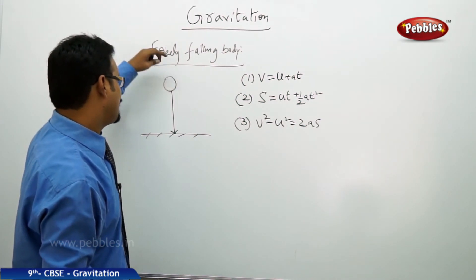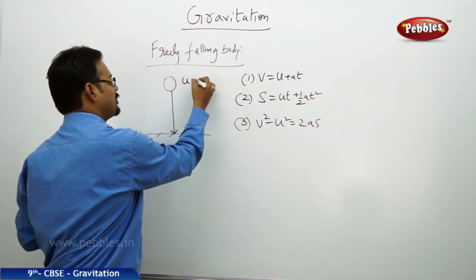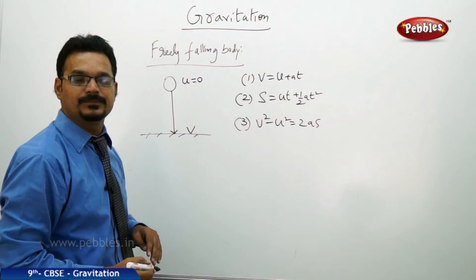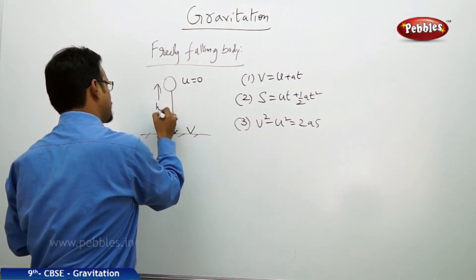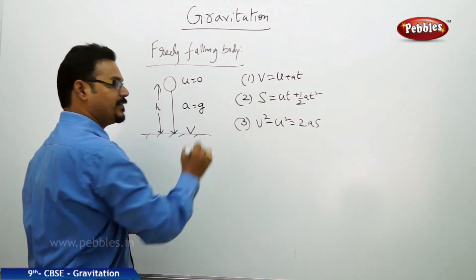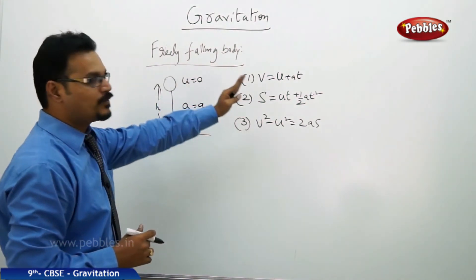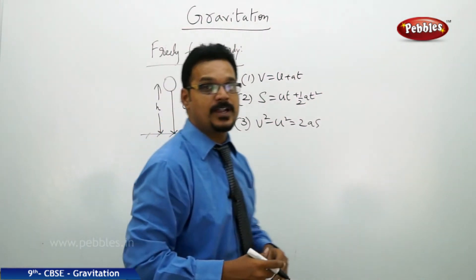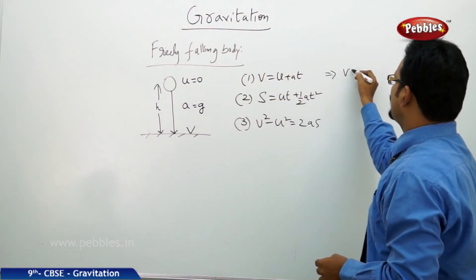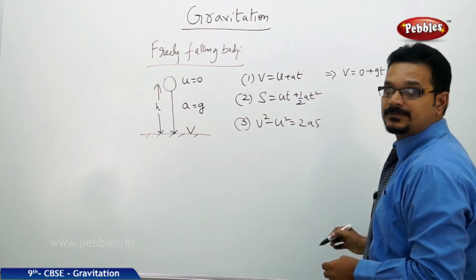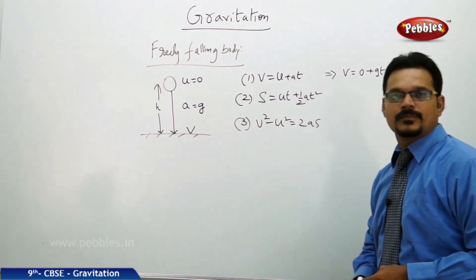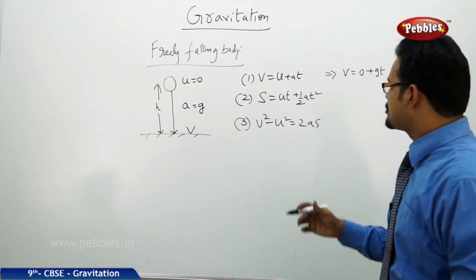See, when the body falls freely at the highest point, it has initial velocity 0. When it hits the ground, the final velocity is v. And the height traveled is h. And it is falling down, its acceleration is acceleration due to gravity g. Now apply these conditions to these equations. How this equation transforms? See, v equal to u plus at implies v equals to 0 plus gt implies t equal to v by g. This is the form we got.